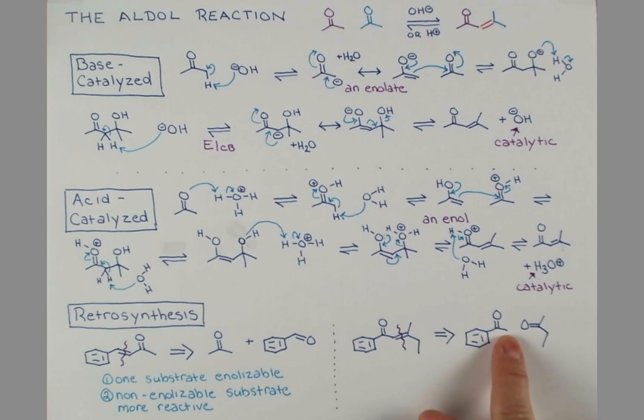This substrate has three right here. And this substrate has some right here and some right here. Under equilibrating conditions, we'll get a complex mixture of products. So we can actually carry out this reaction. But it's going to take a little bit of fancier chemistry. If you're interested in that chemistry, you can check out my video on the crossed aldol. Thanks for watching.